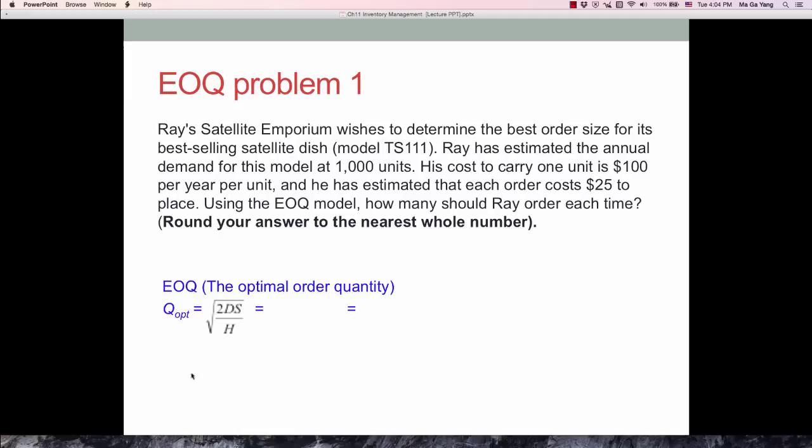What is the annual demand? What is the ordering cost? And what is the holding cost? These components need to be identified in this problem. Annual demand here is 1,000 units. And then ordering cost or setup cost, these are the same term, which is S equals $25. Each order costs $25 to place. And holding cost or storage cost equals $100.